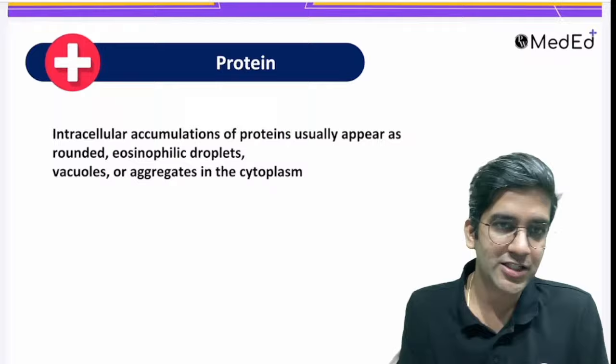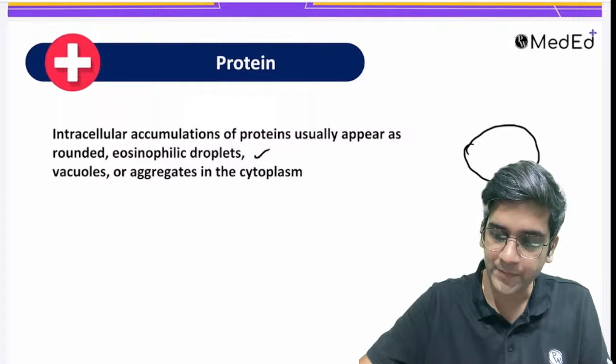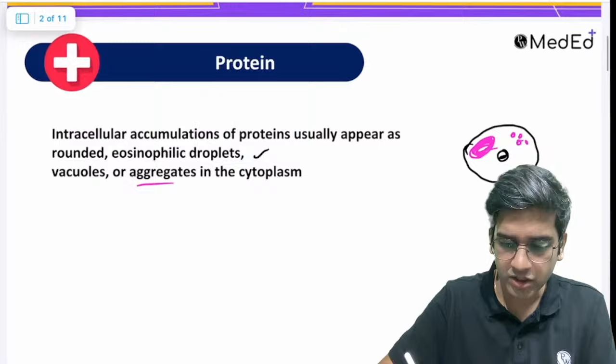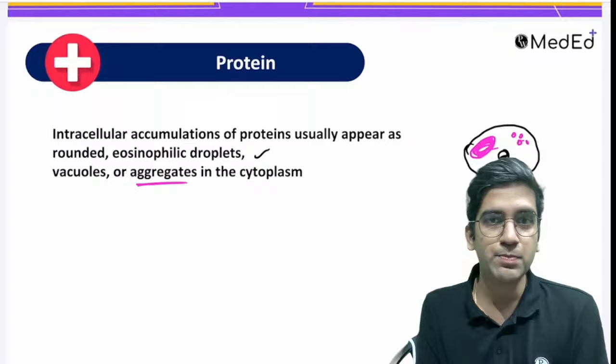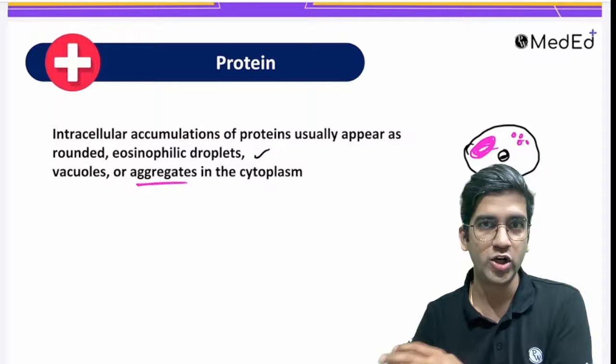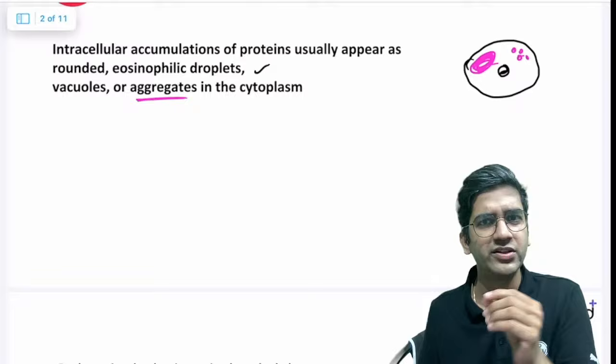So we're going to go with intracellular protein accumulation. The Robbins definition: rounded eosinophilic droplets. It's not always a droplet, but predominantly it will be droplets. The protein might be tiny tiny droplets; if there's a good amount of accumulation it can form a bigger blob. Both are possible — tiny droplets, vacuoles, or aggregates in the cytoplasm. Protein is going to be pink in color. Which part of the cell will be blue in a microscope? The nucleus — because of nucleic acids. Cytoplasm is pink; nucleus is the only one that's blue.